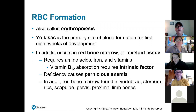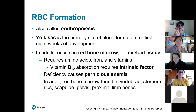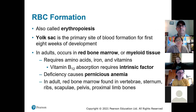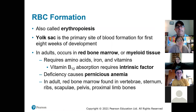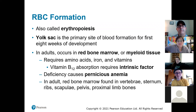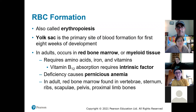Red blood cell formation requires amino acids, iron, and vitamins like vitamin B12. The production takes place in the bone marrow. If you have a deficiency in B12, it gives you pernicious anemia, which we just talked about.